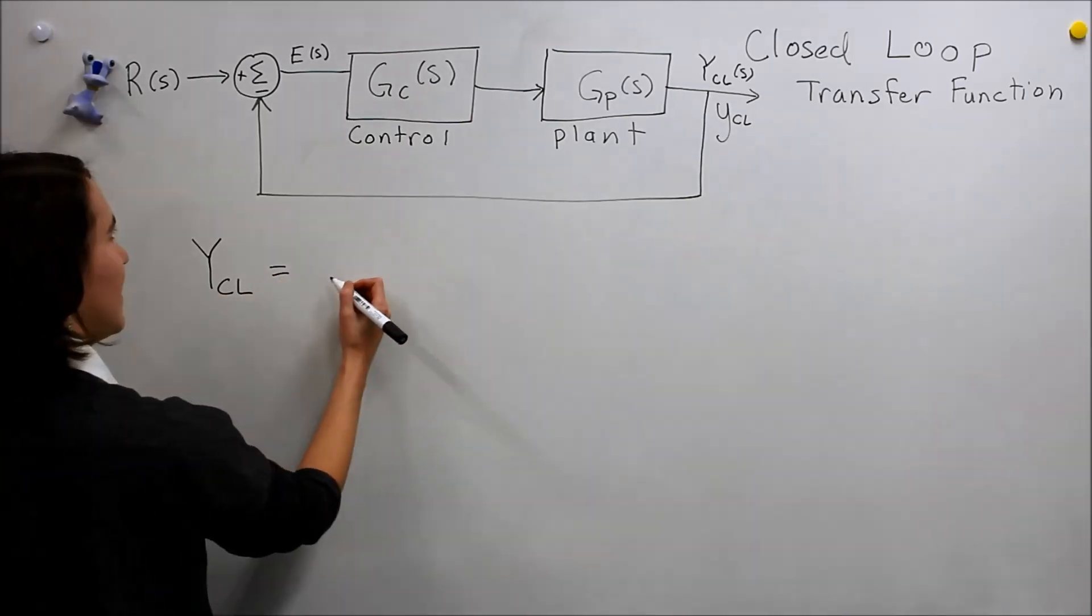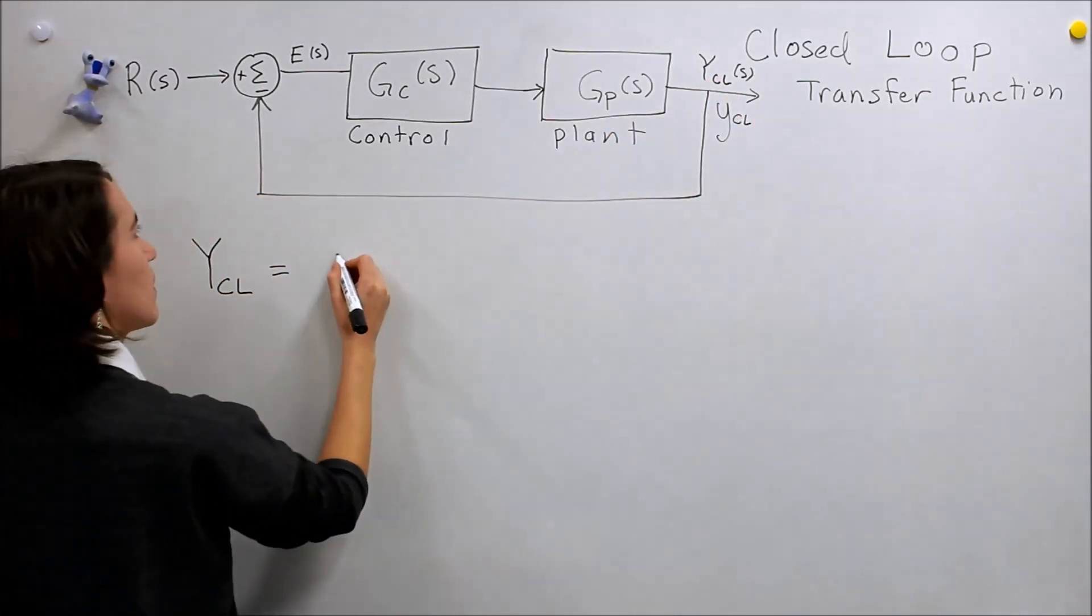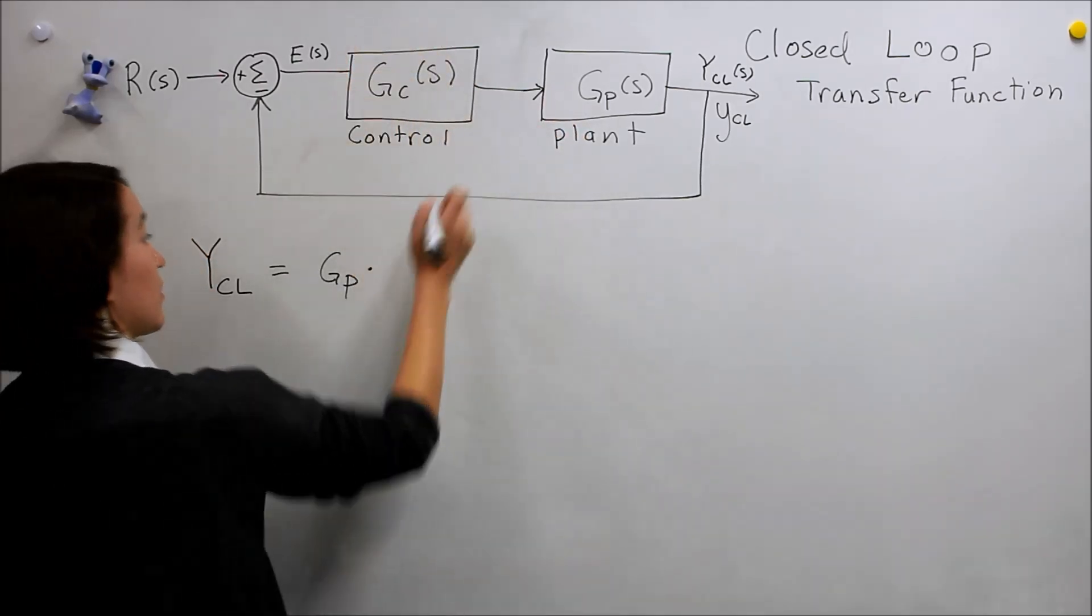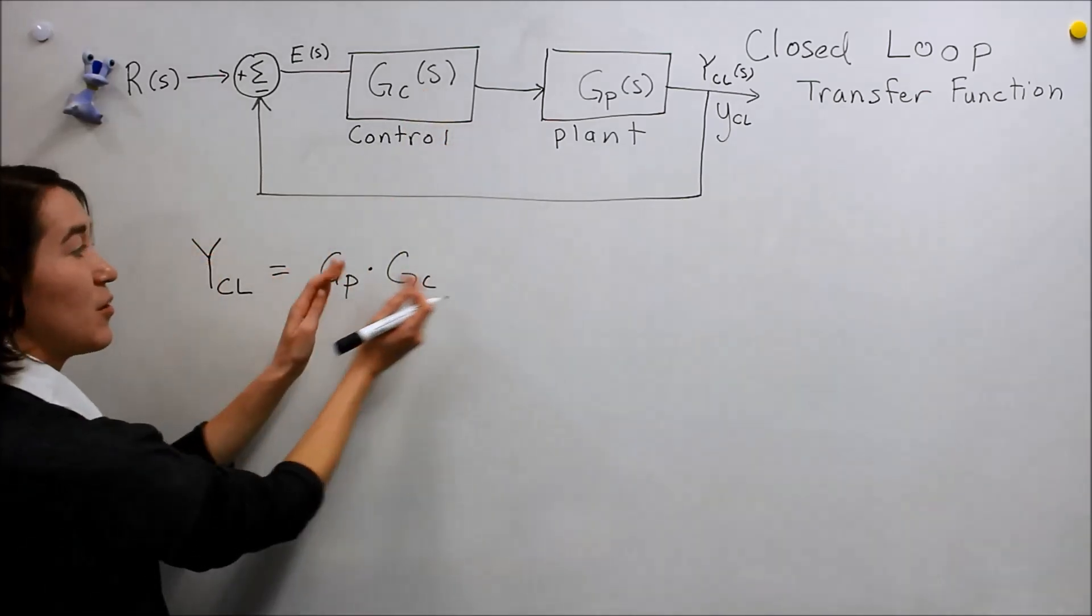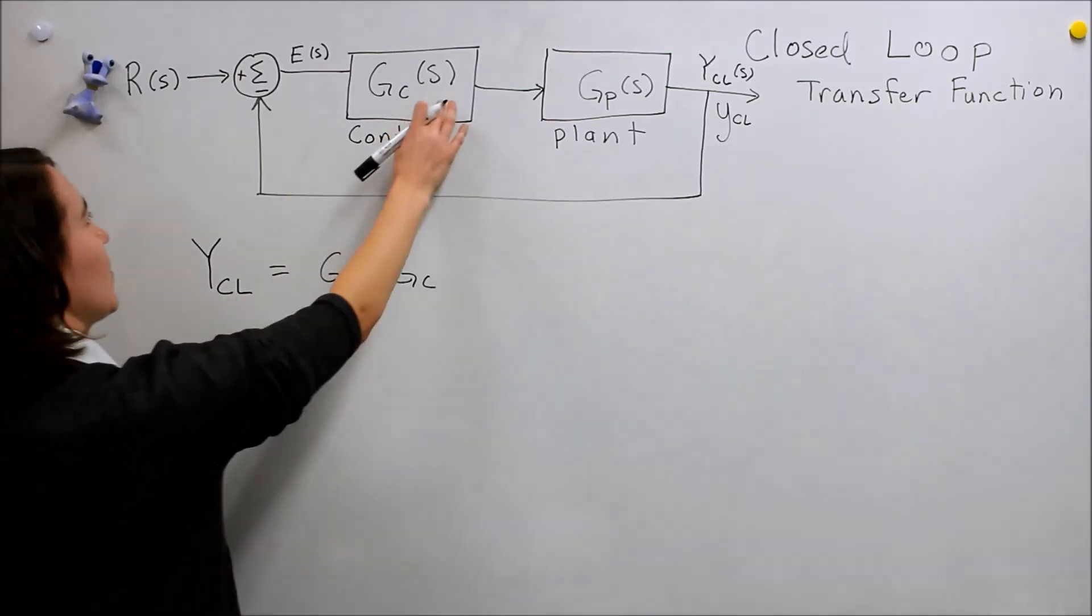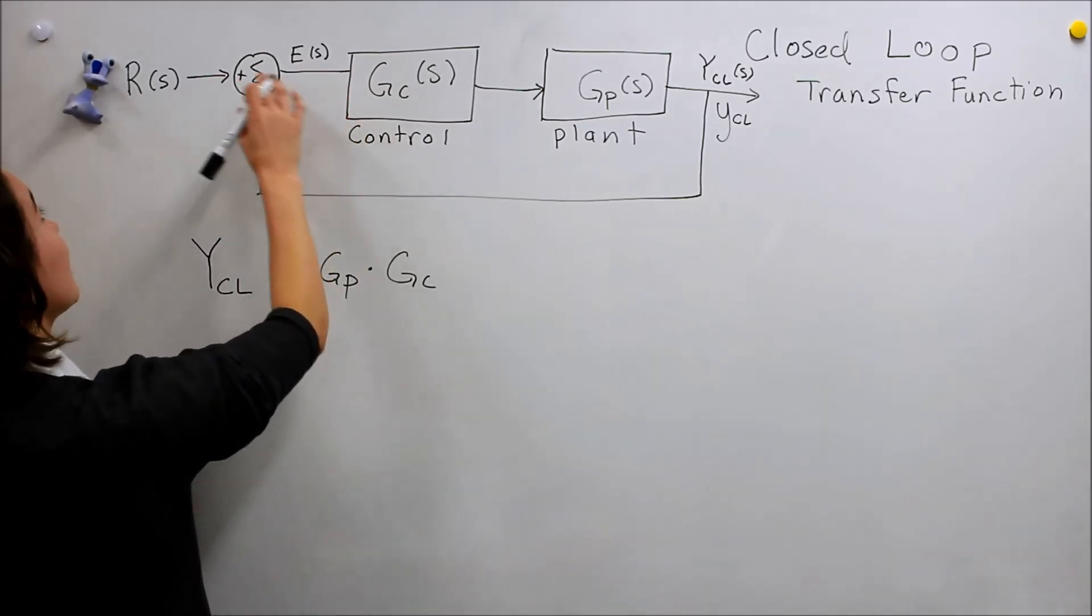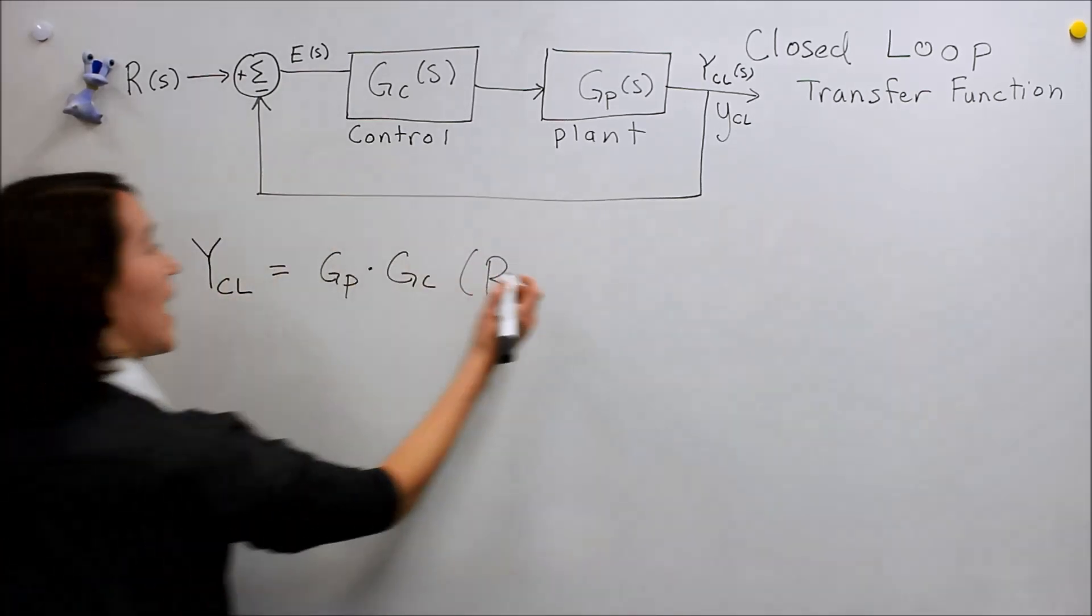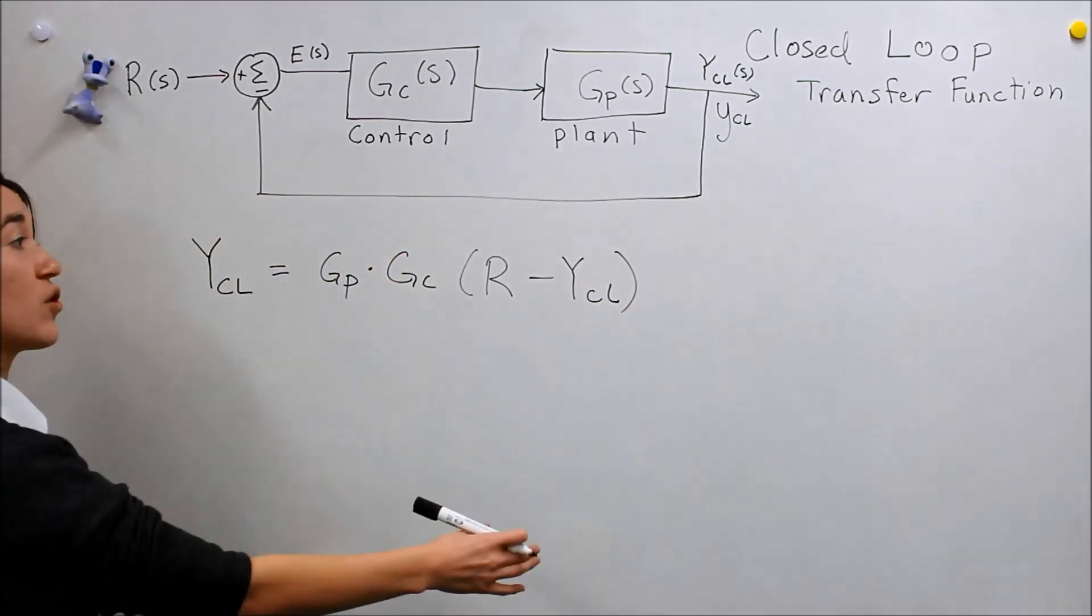So let's go backwards then. Y_cl is equal to this transfer function of the plant. It's going to be multiplied by this transfer function of the control. I'm going to drop all the of s's here, but everything is in Laplace transform. Then we multiply by e(s), but e of s is what? It is r(s), the reference, minus what we already have.